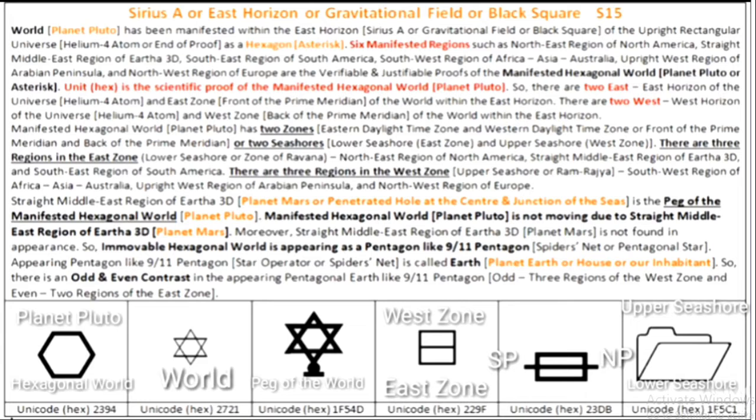Possessors of balanced good sense and my dear students are able to draw the line of demarcation or Lakshmandaka between uncontradicted fates of this equal and opposite manifestedness, such as immovable hexagonal world or Planet Pluto appearing as a pentagonal earth like 9-11 Pentagon with three ascending stairs within the East Horizon of the upright rectangular universe, and projected and communicated anti-natural and unscientific hypothesis such as running global world and moving global earth within the running and moving solar universe.